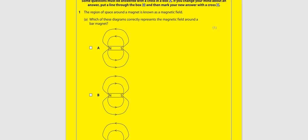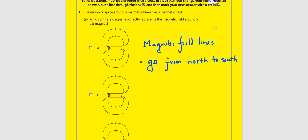Remember, magnetic field lines always go from north to south. Number 2: they never touch or cross each other. So the correct answer is B.